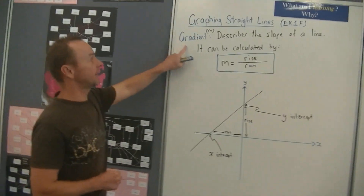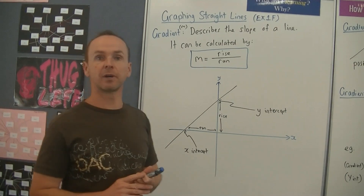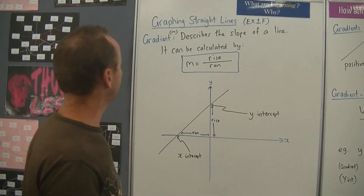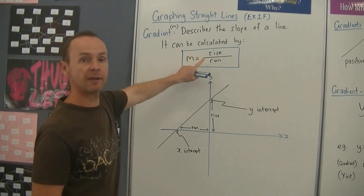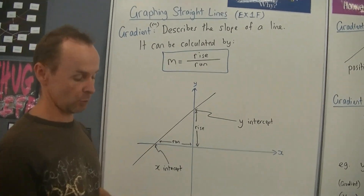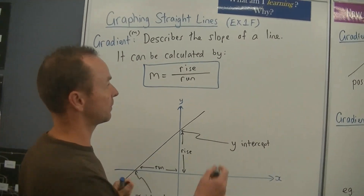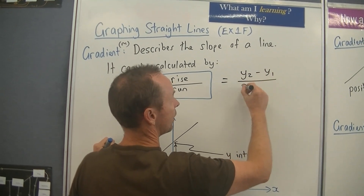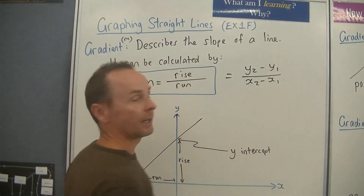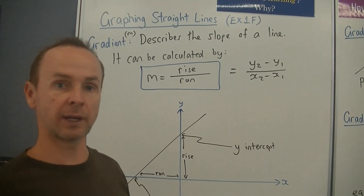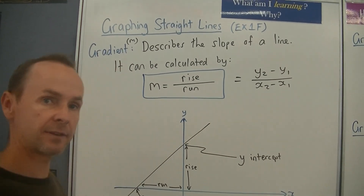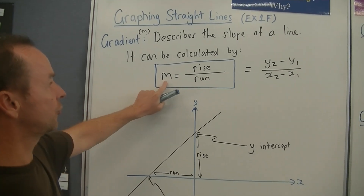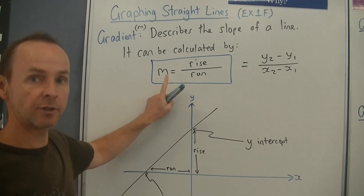Firstly, the gradient. The gradient is the slope of a line. The symbol for gradient is m. And it can be calculated by rise over run. There's also a formula: m equals y2 minus y1 over x2 minus x1. And you use that when you've got two coordinates to work it out. But don't worry about that just yet. So at the moment we're just doing m equals rise over run — m is the gradient.